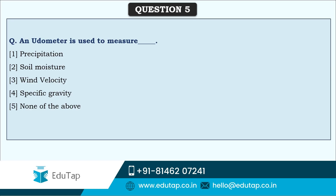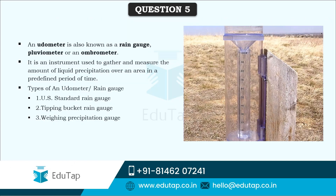An udometer is used to measure precipitation. A udometer, also known as a rain gauge, fluviometer, or ombrometer, is an instrument especially used to measure the amount of liquid precipitation — not snow or hail. It can measure precipitation over an area in a predefined period of time. Various types include the US standard rain gauge, tipping bucket rain gauge, and weighing precipitation rain gauge.